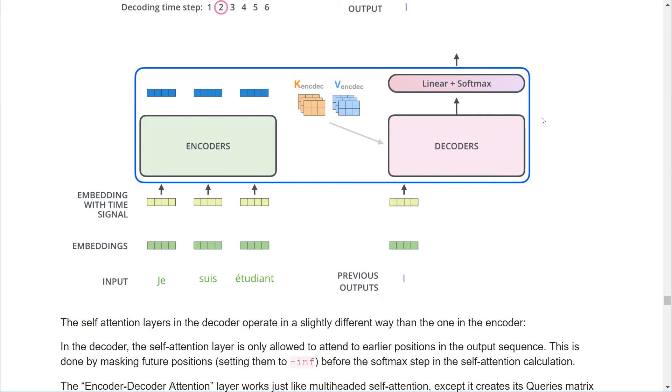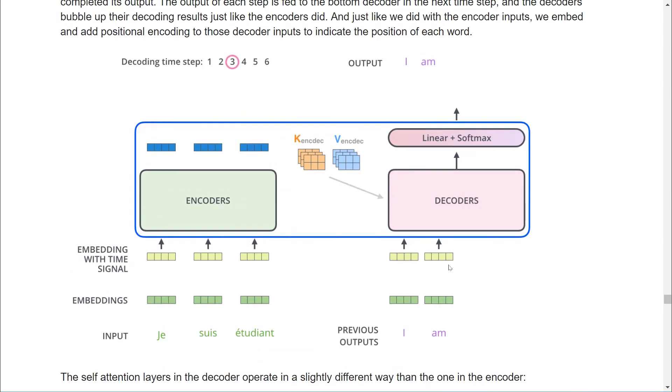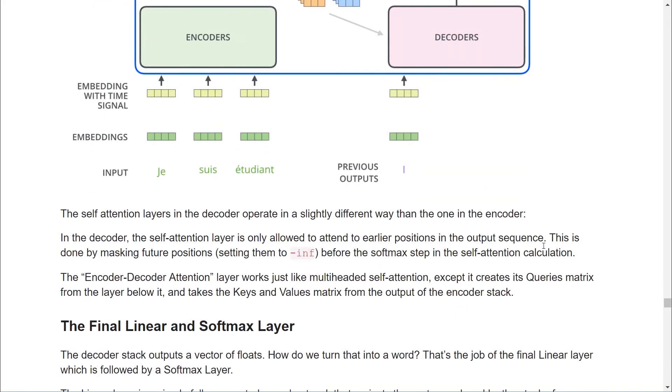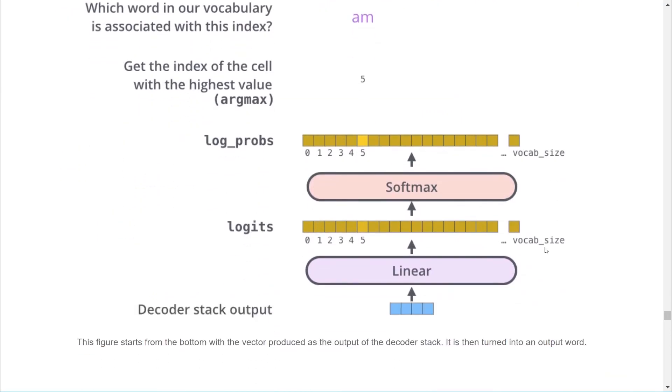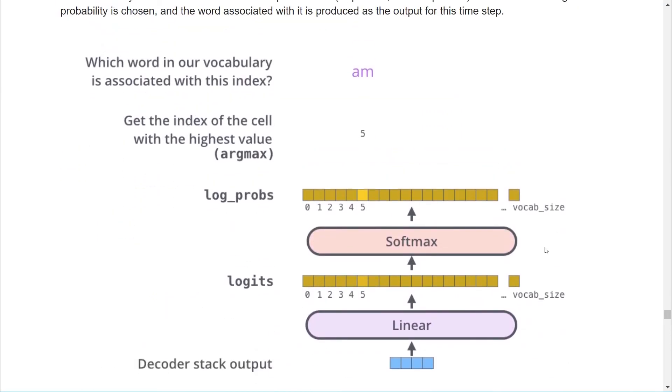One pass through the decoder network generates the first token, and the previously generated tokens are then fed back in as additional input. Just like in the input layer, we generate embeddings and add positional coding to the words of the output language. Since we are generating one word at a time, we don't want the self-attention mechanism attempting to look at words that we haven't generated yet. So we mask future positions by setting them to negative infinity just before the softmax step in the self-attention layer.